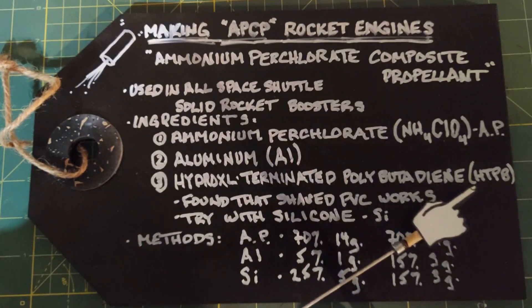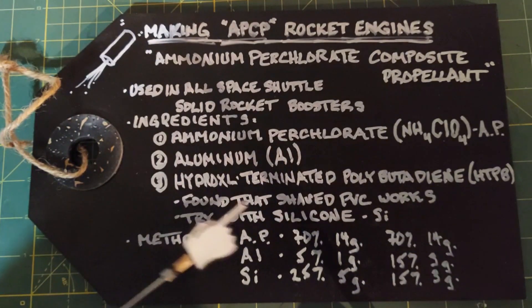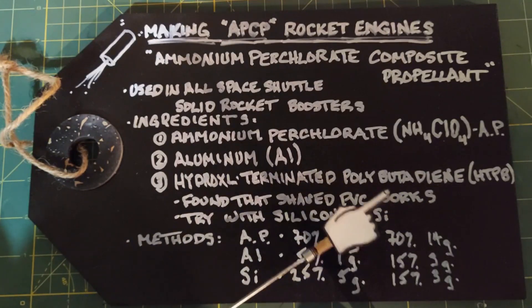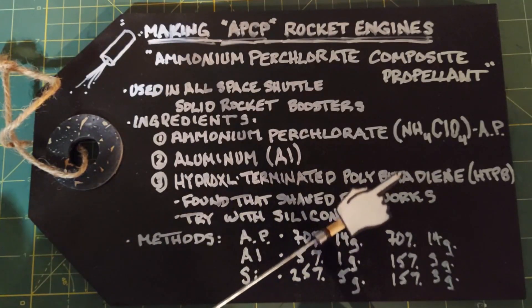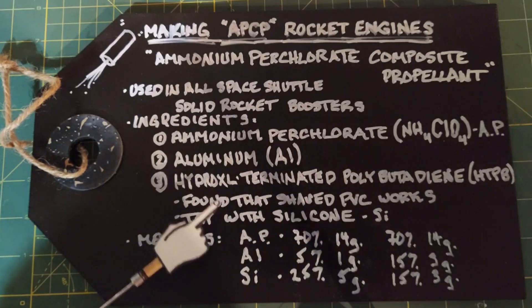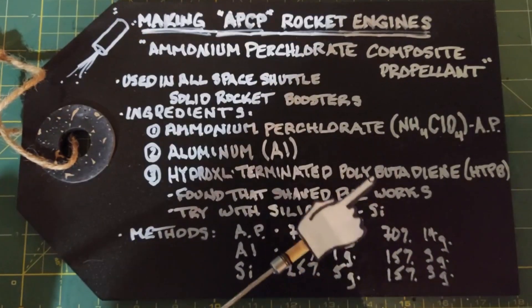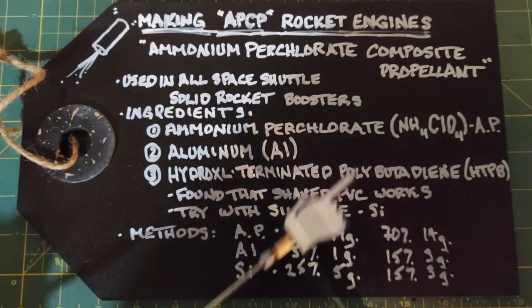When you're doing these at home or as a DIY project, you can use the HTPB, but over time it's been found that even shavings from a PVC pipe will work in place of the HTPB. I have read about people trying it with silicone, and that's what I'm going to be trying to test this composite using silicone.